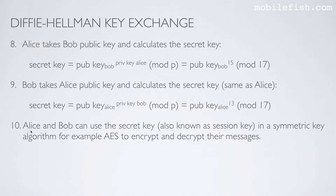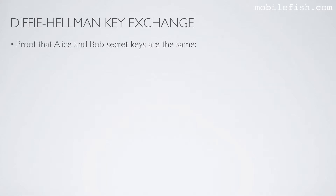Step 10. Alice and Bob can use the secret key, also known as a session key, in a symmetric key algorithm — for example AES — to encrypt and decrypt their messages.